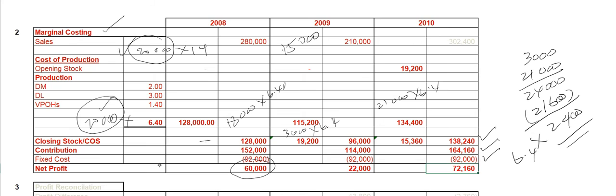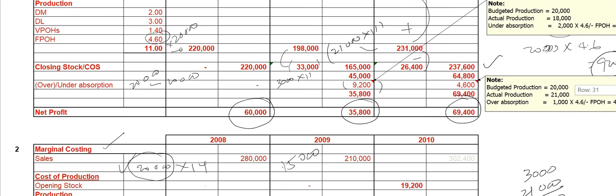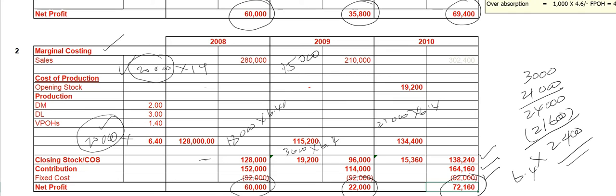So, the net profits under marginal costing are: $60,000, $22,000, and $72,160. Previously, we calculated net profit under absorption costing and got $60,000, $35,800, and $69,400. You can see a difference between the net profits under absorption costing and marginal costing. In the first year there is no difference because production was equal to sales units, so there is no difference.